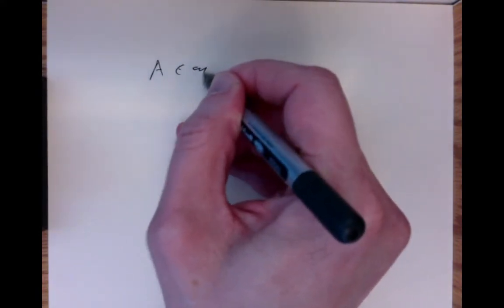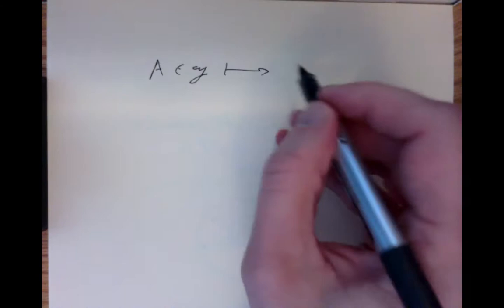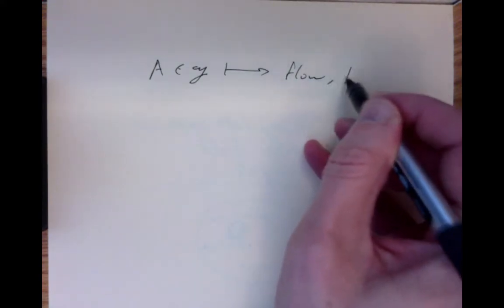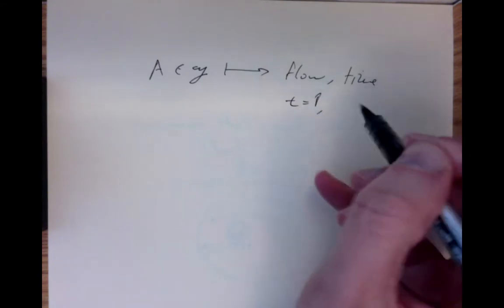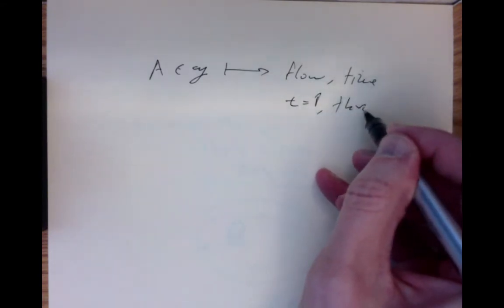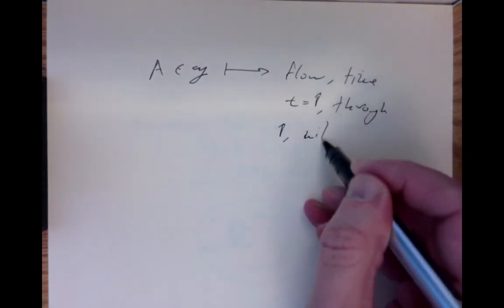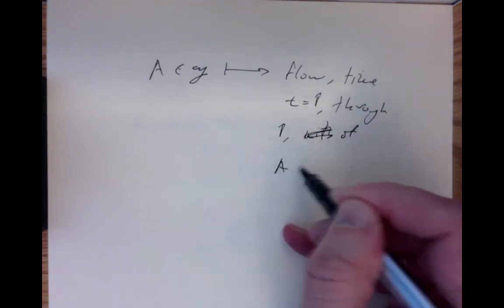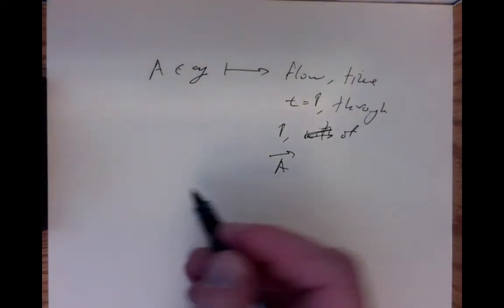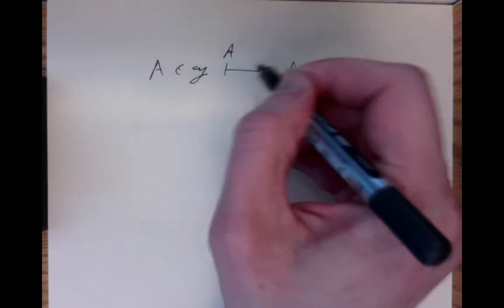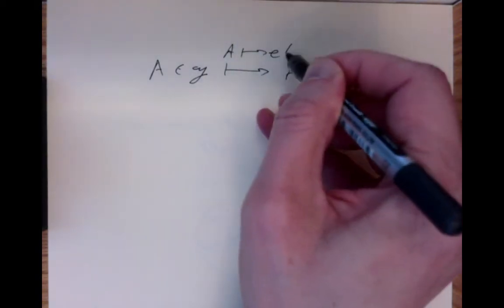This encourages us to define a smooth map called the exponential map. We take any element of the Lie algebra and map it to the flow at time t equals 1 through the point 1, with the velocity of the left-invariant vector field corresponding to it. That's the exponential map — it maps a to a point we'll call e to the a, and it's well-defined.